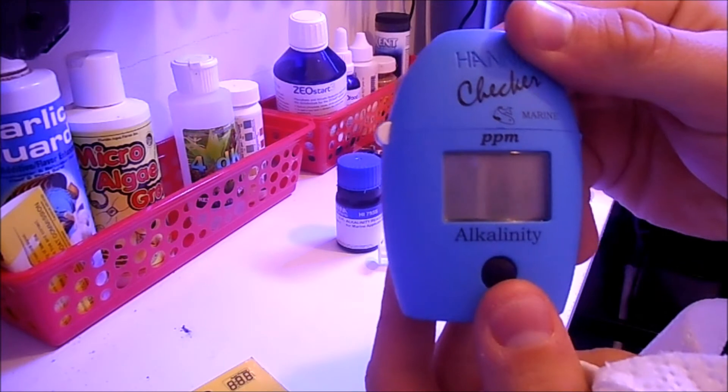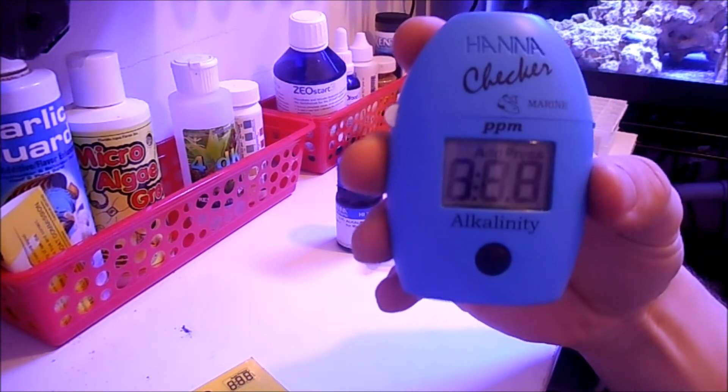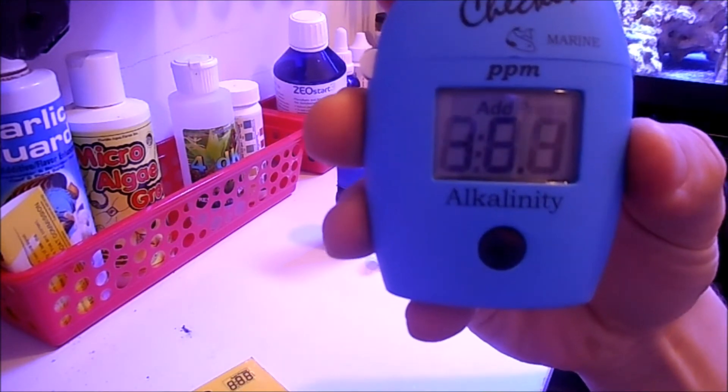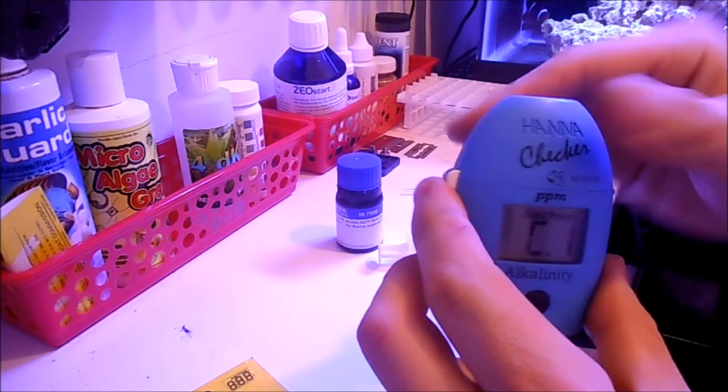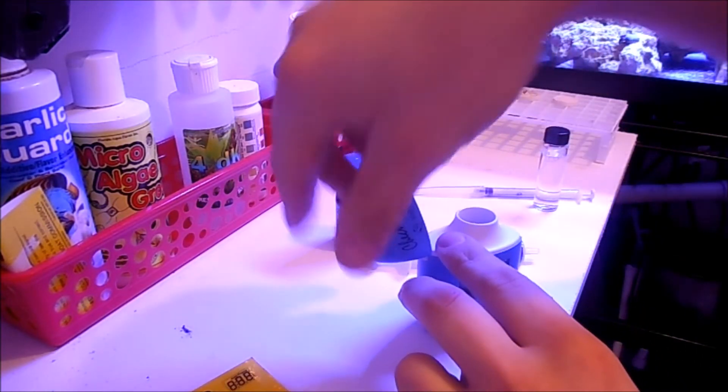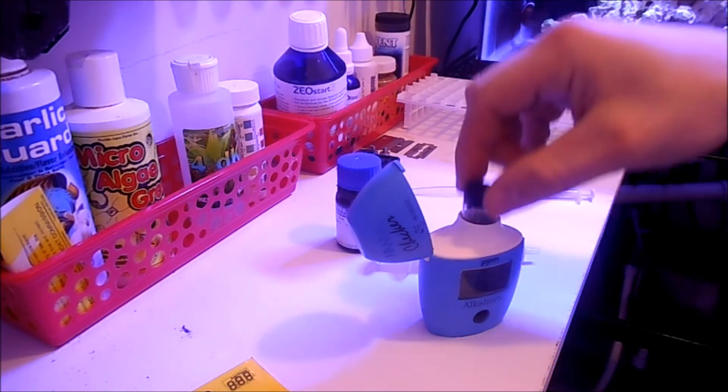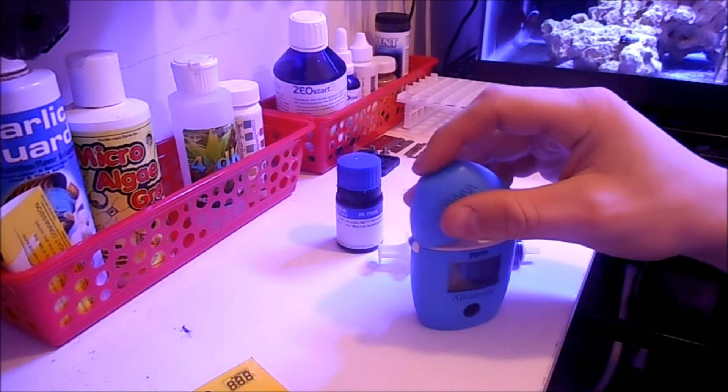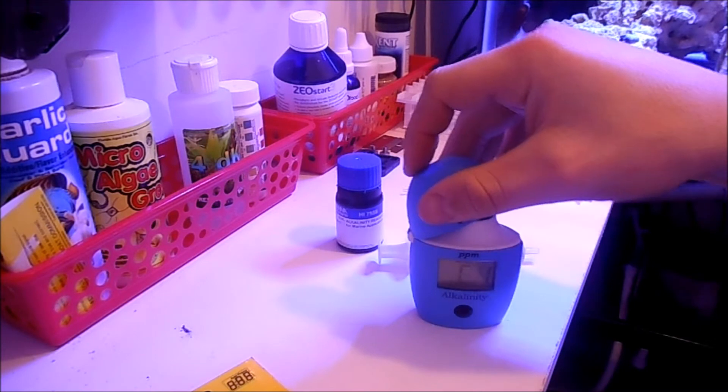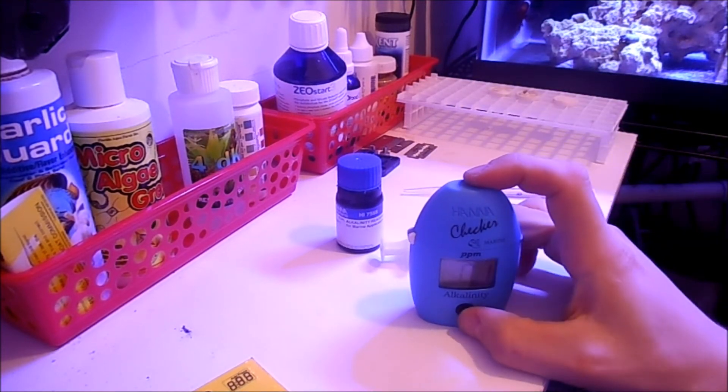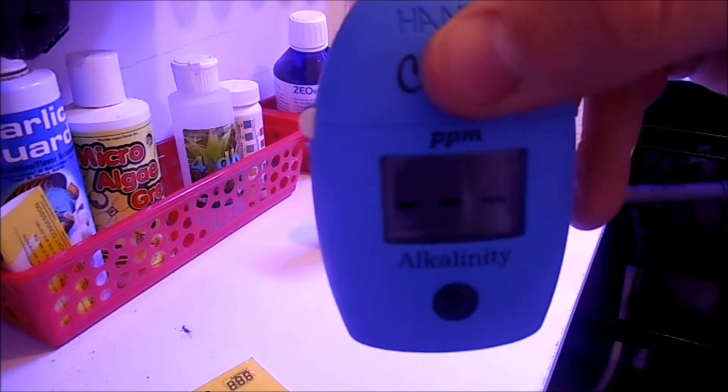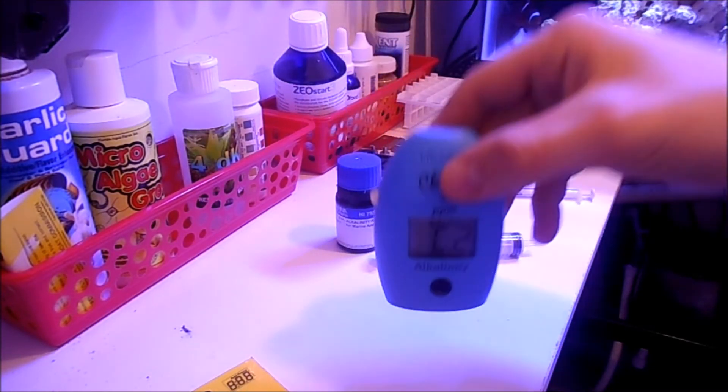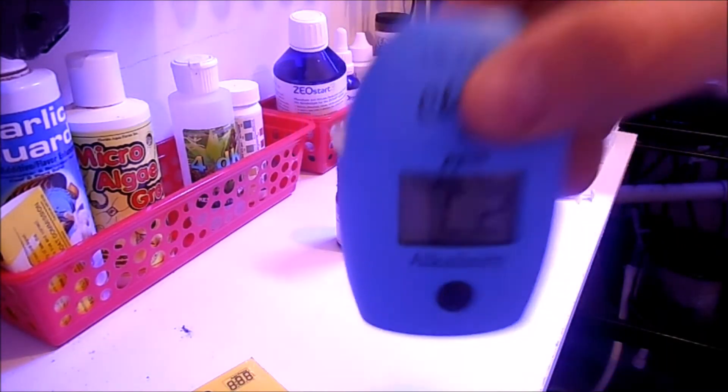Set that aside. You're going to turn on the Hannah checker itself. Now add C1, so basically you add the empty container with just the water, no reagent. Then you hit the button once and wait for it to do its thing. Basically it's zeroing it. Okay, now it says 2.